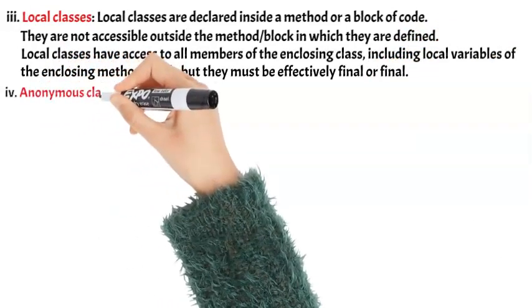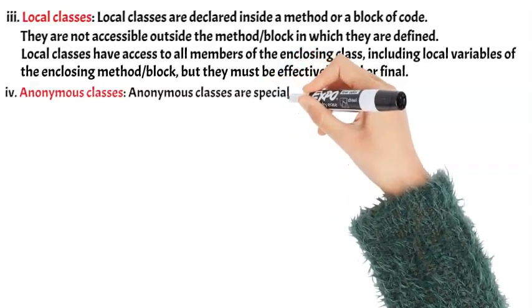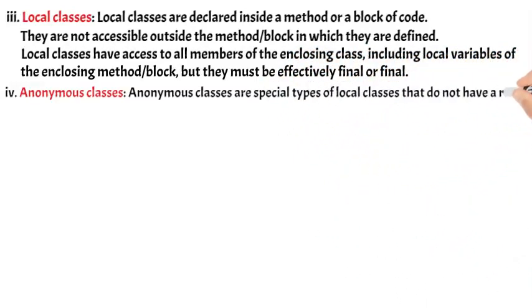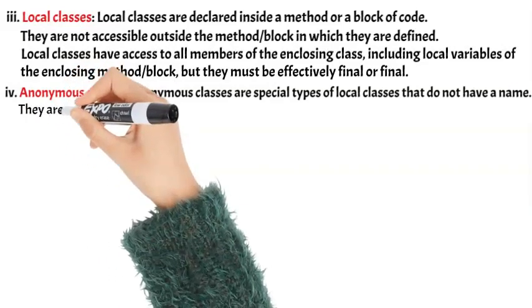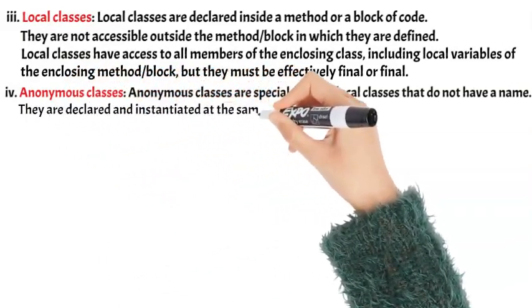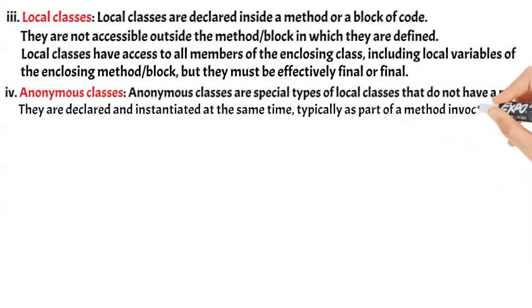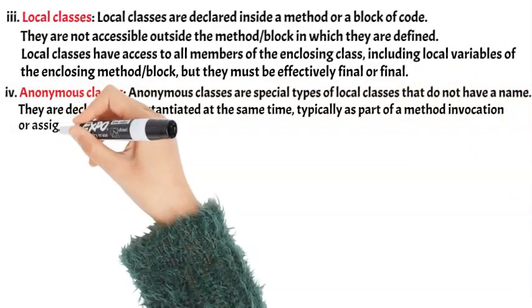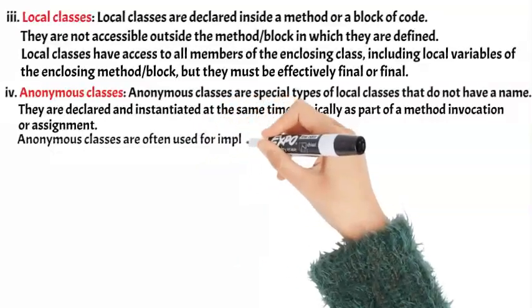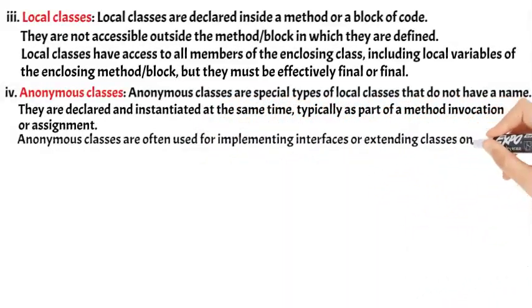4. Anonymous Classes: Anonymous Classes are special types of local classes that do not have a name. They are declared and instantiated at the same time, typically as part of a method invocation or assignment. Anonymous Classes are often used for implementing an interface or extending classes on the fly.